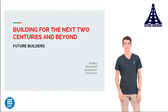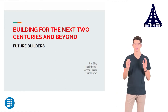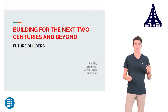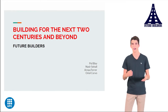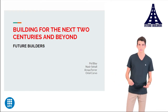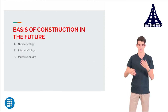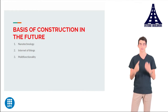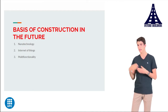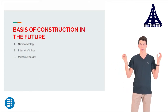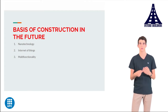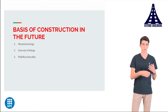Hi, we are Future Builders. This is a course project of chemistry in the first course of civil engineering at the UPC of Barcelona. Our objective is to study how construction could be in 200 years and beyond. To do this, we're focusing on three major fields: nanotechnology, the Internet of Things, and multifunctionality, as we think materials are going to have more than one function and are going to do more than one thing at once.